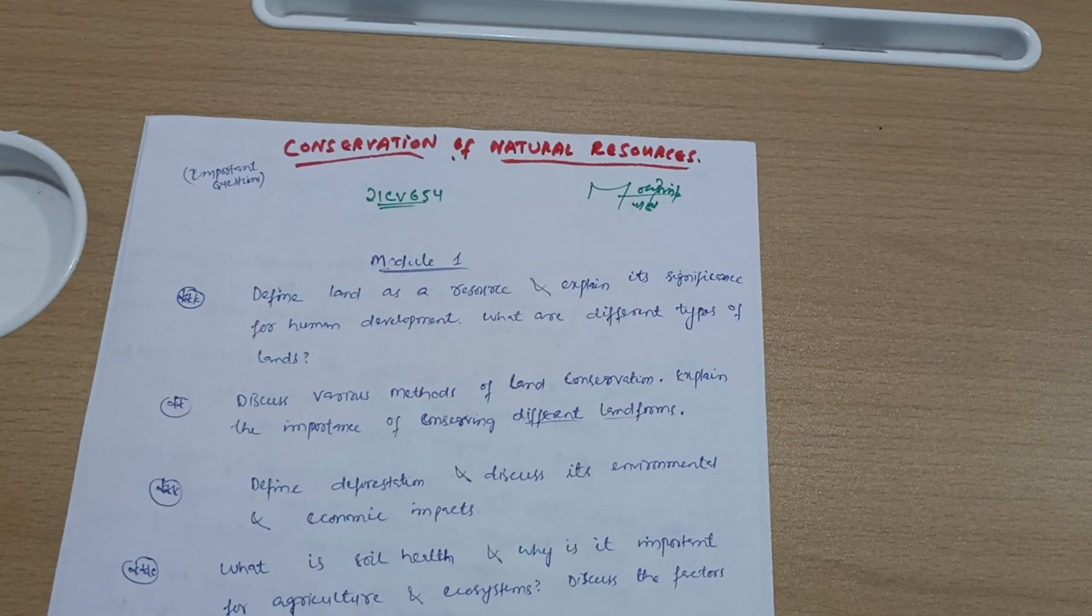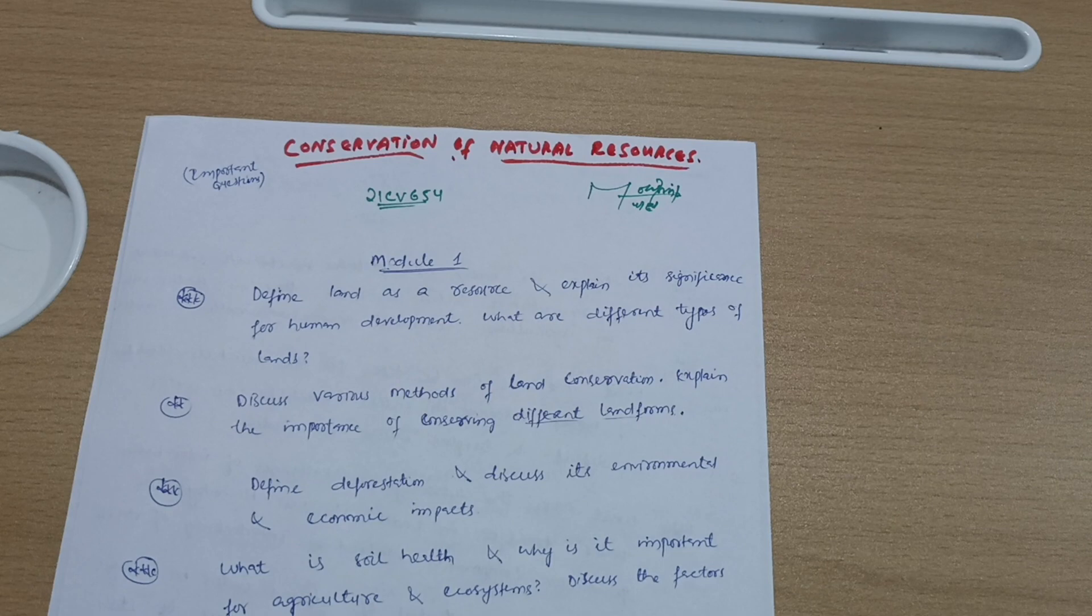Dear sixth semester students, welcome back to another video. I hope you are all doing well. For those having the open elective subject Conservation of Natural Resources, this video is for you. The subject code is 21CB654.